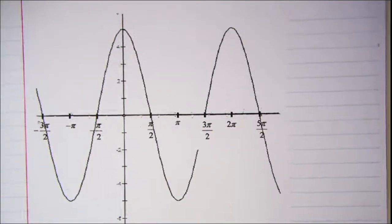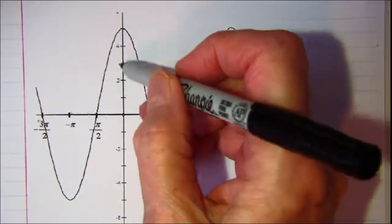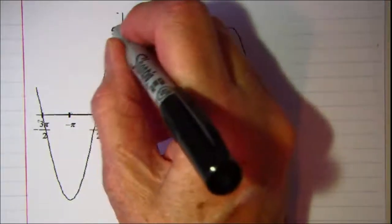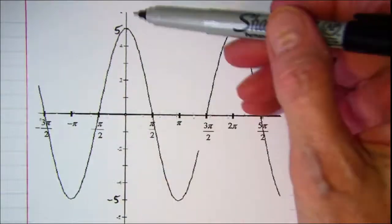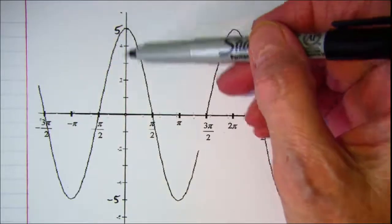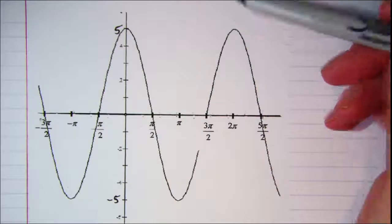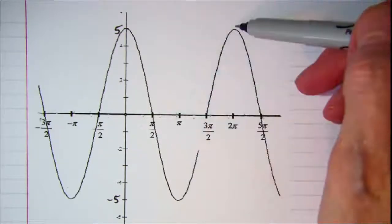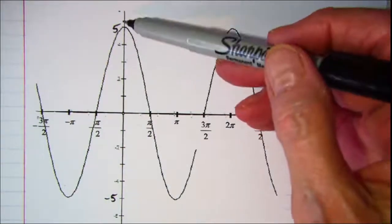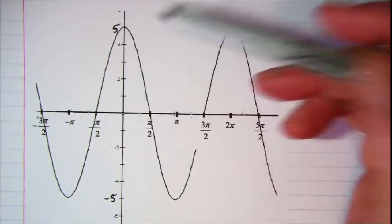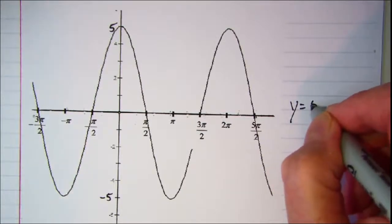And for this curve we have one, two, three, four, this is five and this is negative five, and we start at the top when x is zero. So this is a cosine curve and we come back to the top at x equal two pi. So the amplitude is five and it's a cosine curve, so y equal five cosine x.